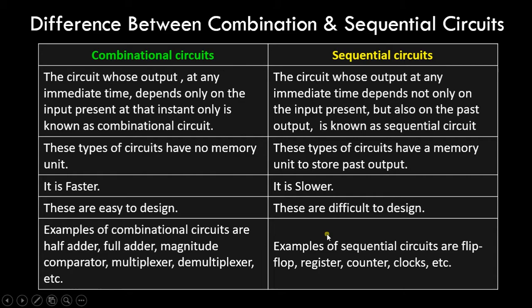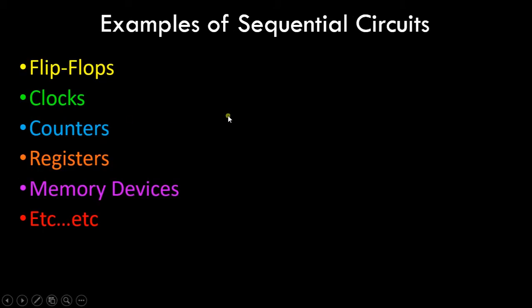Examples of sequential circuits are flip-flops, registers, counters, clocks, and memory devices. I'm not going to get into a lot of detail on these individual types right now, because these topics are large enough and I'll be dedicating separate videos for each of them. In fact, there are different sub-categories of flip-flops and counters as well, so we'll take one at a time in upcoming video tutorials in this playlist.